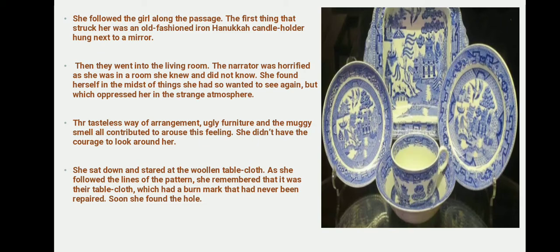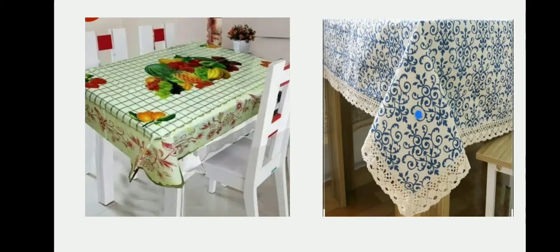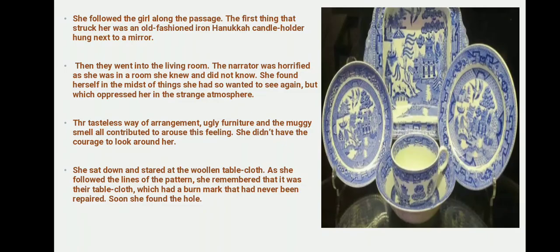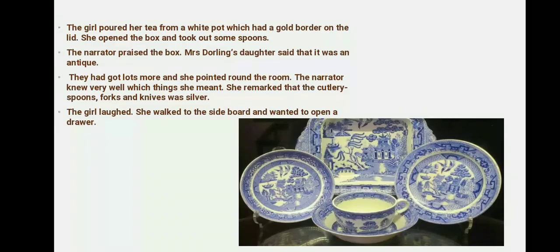She noticed a wooden tablecloth spread on the table. She remembered that her mother had made it with her own hands. There was a small flaw or hole somewhere in it, and she remembered it. She began tracing her finger along it. The girl then offered her tea from a teapot that had a gold border.